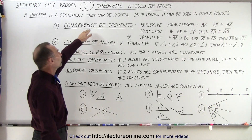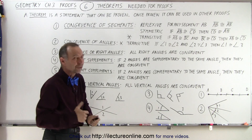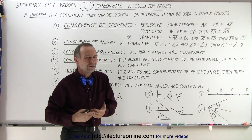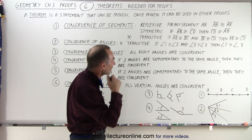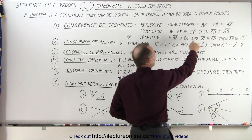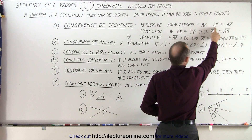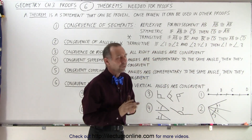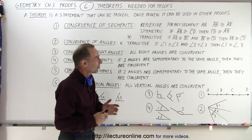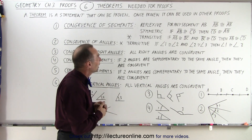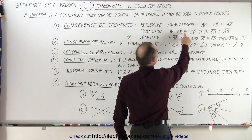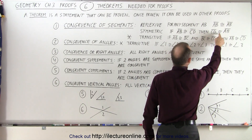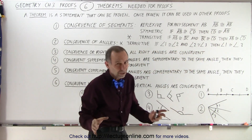First of all, congruence of segments. We have three different kinds: reflexive, symmetric, and transitive. Now, the first two are not very useful. Reflexive means that for any segment, we can say that line segment AB is congruent to line segment AB. The symmetric property says that if line segment AB is congruent to line segment CD, then we can assume that line segment CD is congruent to line segment AB. That seems self-explanatory, but in mathematics things like that need to be proven.